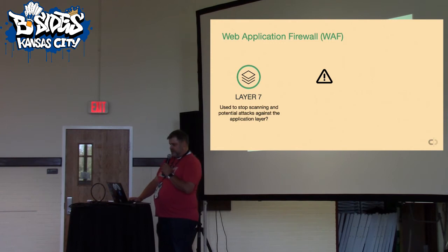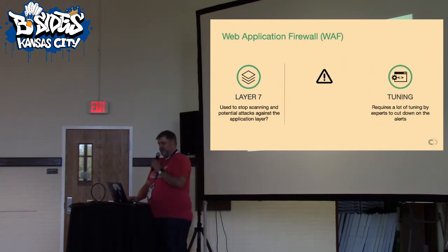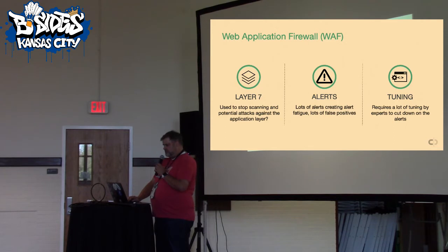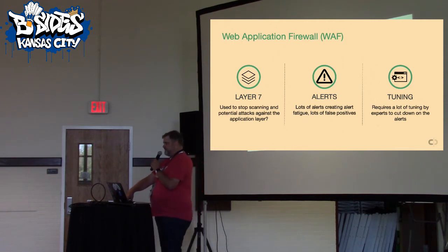So what is a web application firewall? It's at Layer 7. It's used to stop scanning and potential attacks against the application. You can tune it, but it requires a lot of tuning, a lot of patching. There's a lot of noise involved with web application firewalls — a lot of alerts, things that we tend to ignore. Does anyone use their WAF data for anything, or do they just let it run? Usually we don't even use the data because there's just so much of it.